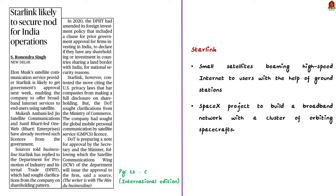Now let us move on to the next news article discussion. This article talks about Project Starlink of SpaceX — Elon Musk's company. The news is that Project Starlink is likely to receive government approval next week, which would allow Starlink to provide broadband internet services through satellite technology. Already, Jio Satellite Communications led by Mukesh Ambani and Bharati Enterprises led by Sunil Bharti have received similar licenses to offer satellite-based internet services. Let us understand the Starlink project, how it works, who benefits, and its advantages.